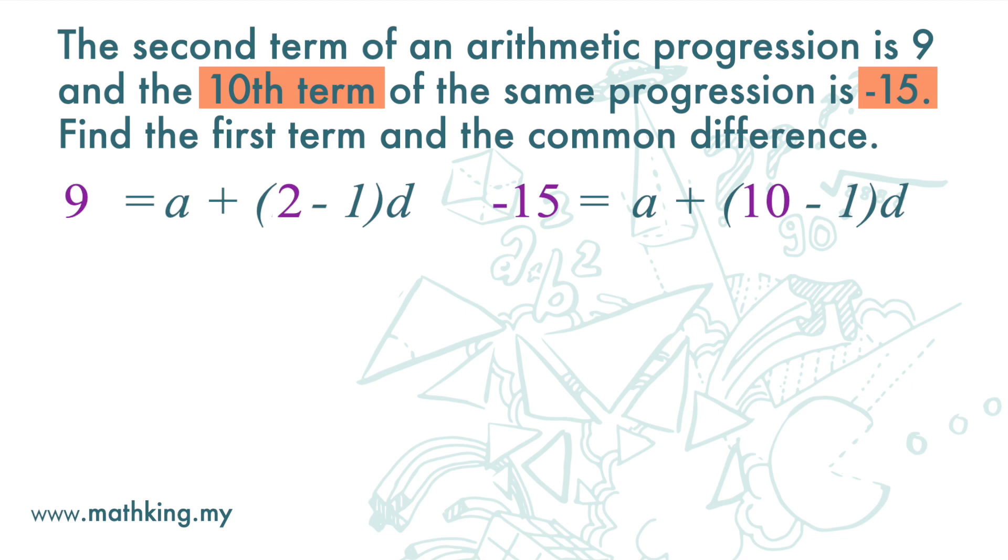We are required to find the first term and the common difference. The first term is a in the equations, and the common difference is d. Note that we have two variables, a and d, in two equations. With two variables in two equations, we can find the value of a and d by solving simultaneous equations.